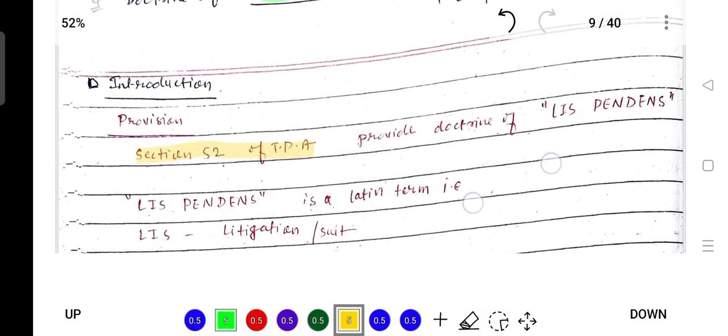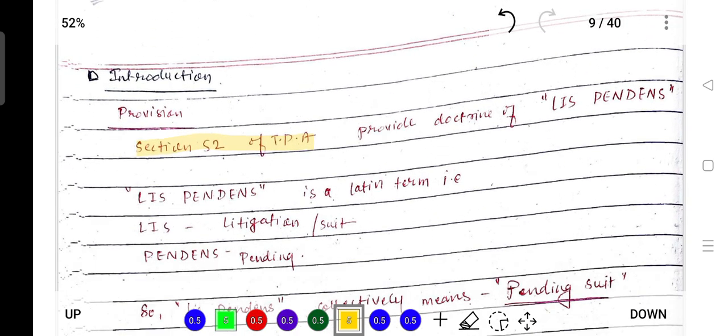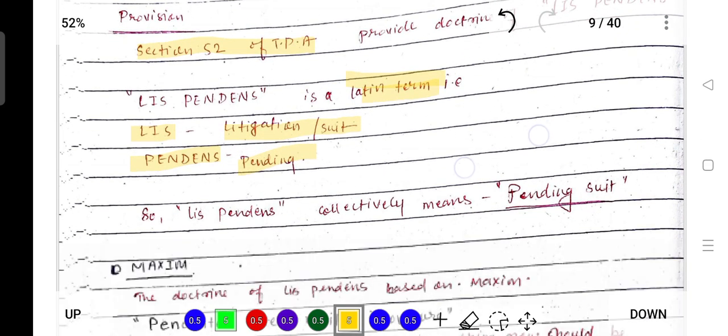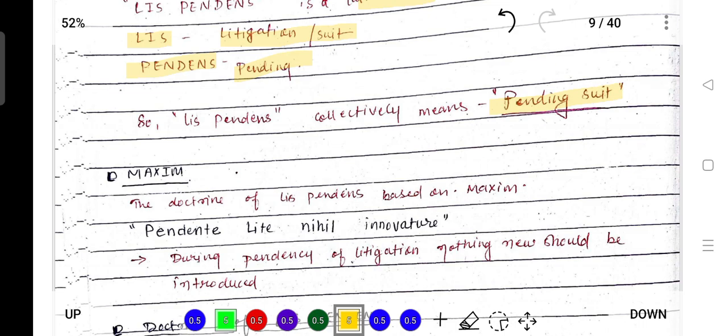The doctrine of lis pendens is a Latin term, a combination of two words: lis and pendens. Lis means litigation or suit, and pendens means pending. So collectively, it is termed as pending suit.